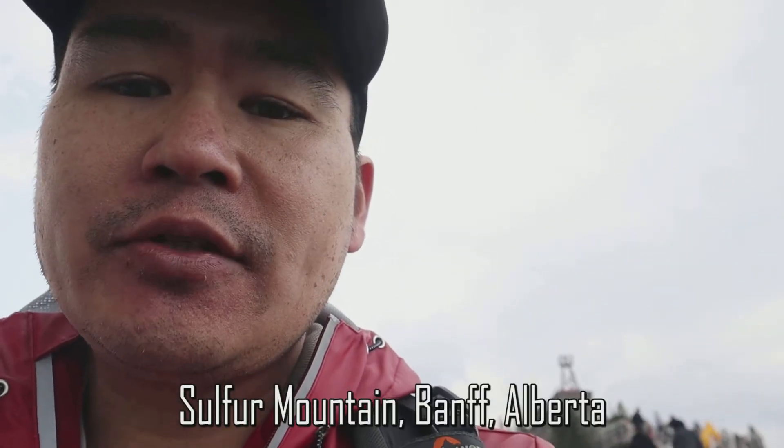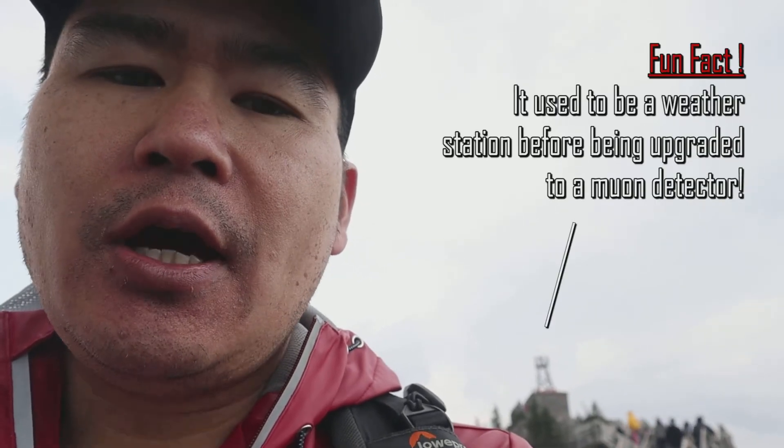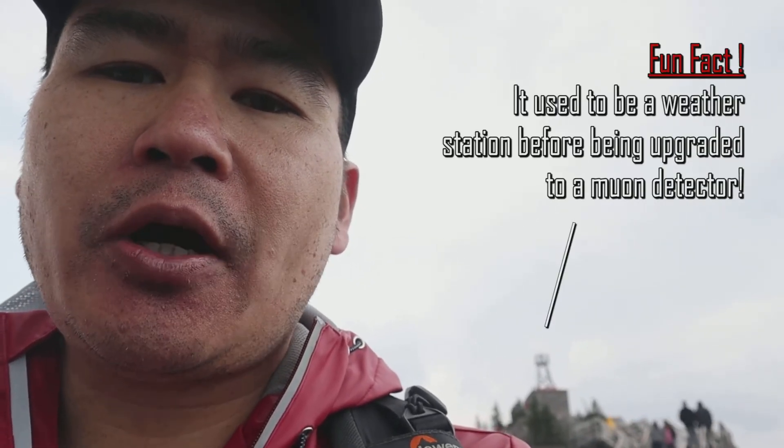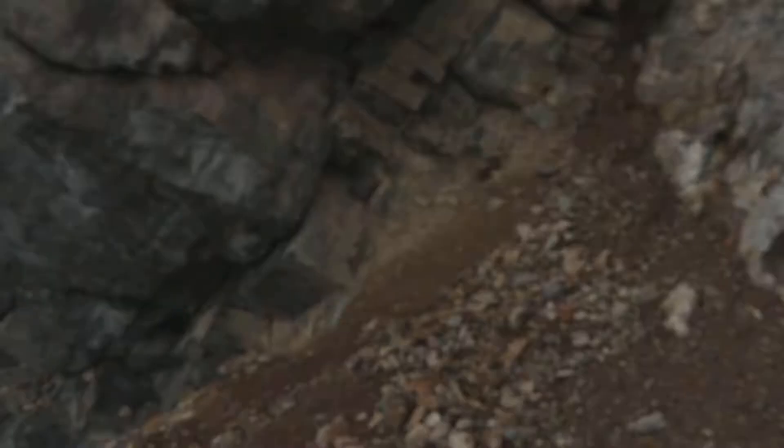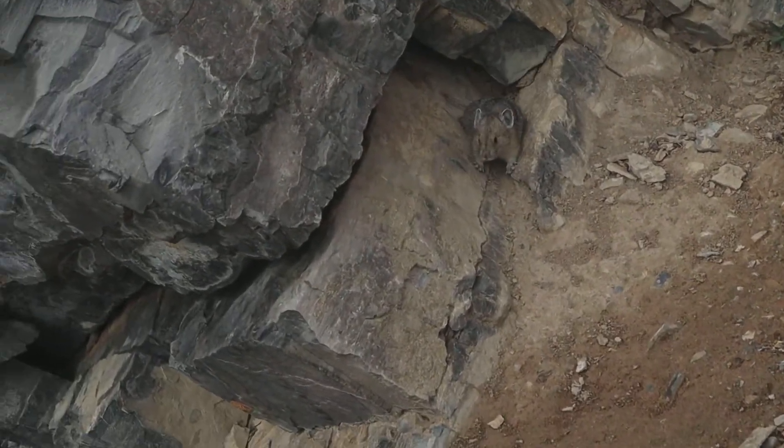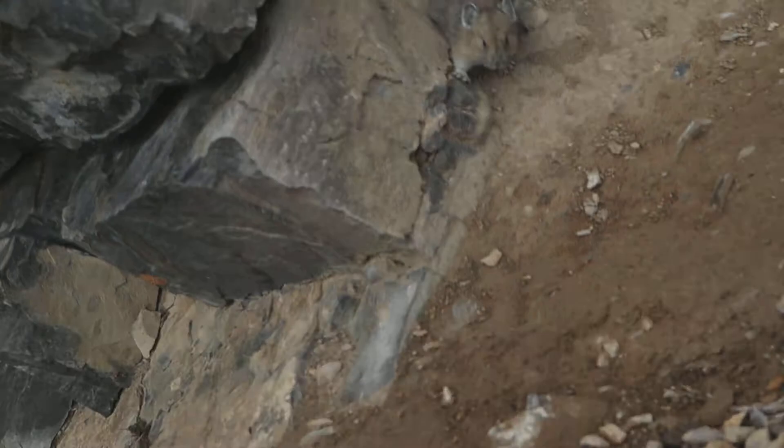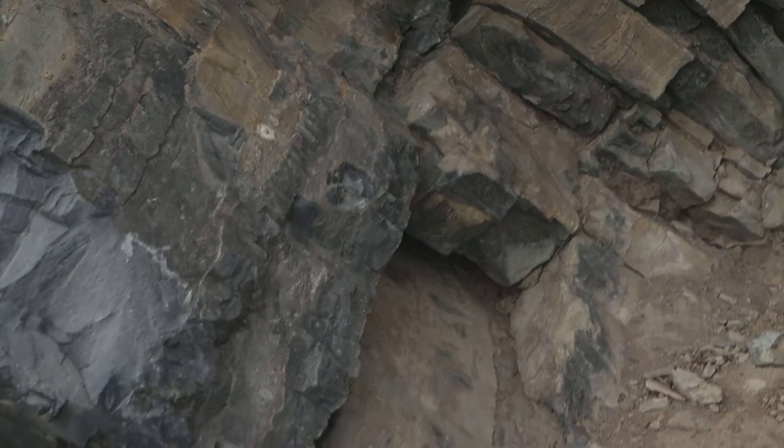So here I am at the top of Sulfur Mountain in Banff, Alberta, where right behind me there's a cosmic ray detector. It's used to detect tiny little particles called muons, roughly the size of an electron particle. Fuzzy little creature, do you see that? Where's the fuzzy creature? Hey buddy, oh he disappeared.